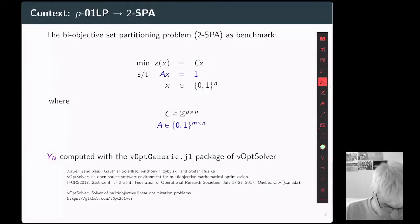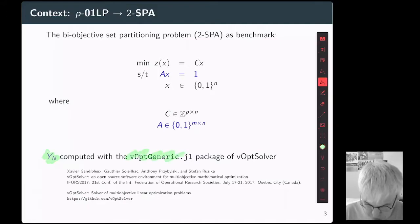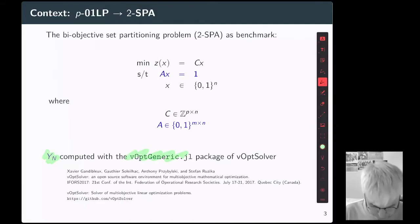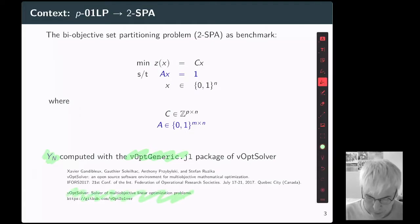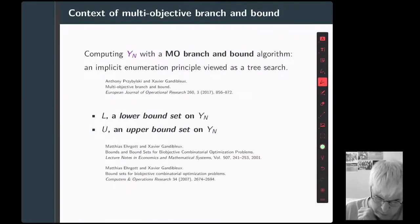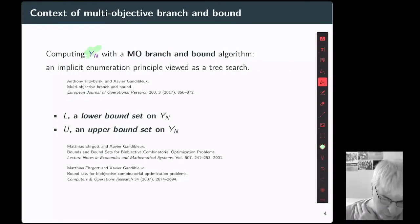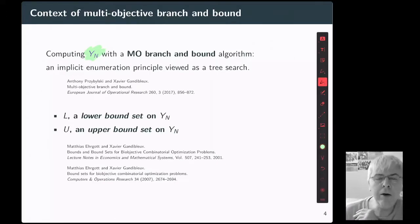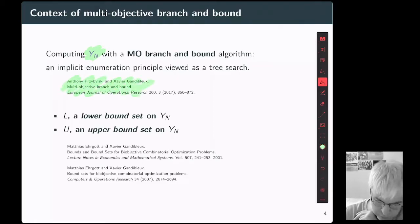For computing the set of non-dominated points YN, we have used VOP generic, which is one package provided by the VOP solver. This package is available online. Now let me introduce what we call bound sets. We want to compute the set of non-dominated points using a branch and bound algorithm. Branch and bound algorithms have been extended to the multi-objective case, and there is a recent survey presenting the state of the art on multi-objective branch and bound algorithms.